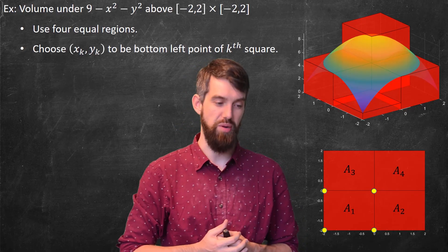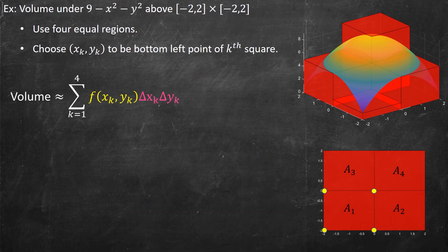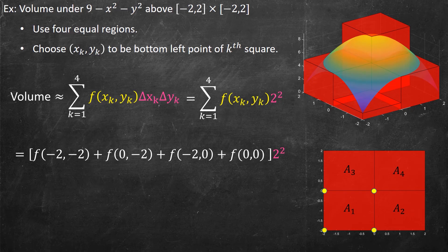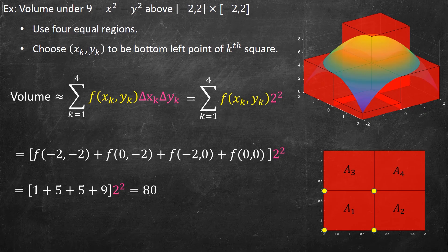The volume is approximately the sum of four terms. Each term is the function value at the chosen corner times delta x_k times delta y_k. In this example, the change in x and the change in y for each of the four little rectangles is 2, so the base area of each box is 2 squared equals 4. Evaluating the function at the four corner points (-2,-2), (0,-2), (-2,0), and (0,0) gives 1, 5, 5, and 9 respectively. Multiplying the sum 1+5+5+9 = 20 by 4 gives an approximate volume of 80.